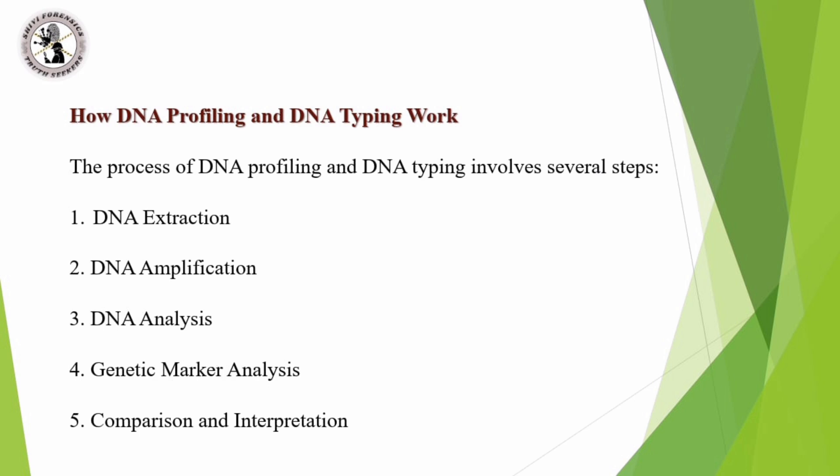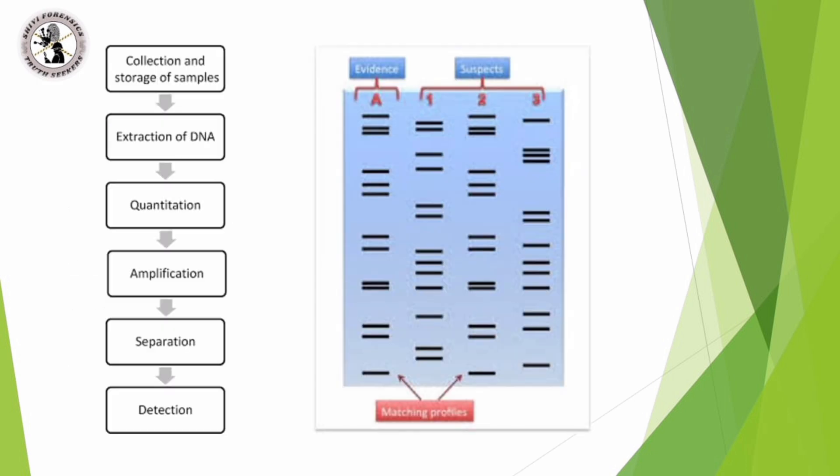The next slide deals with the schematic representation of the procedure of DNA profiling and typing. First is the collection and storage of the samples, followed by extraction of the DNA, then quantitation — nothing but the quantification of the DNA — then amplification, and finally separation and detection.